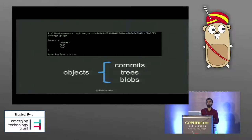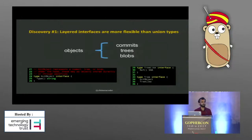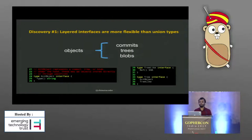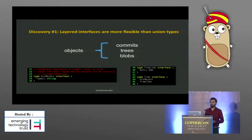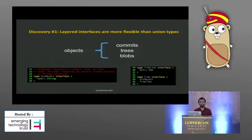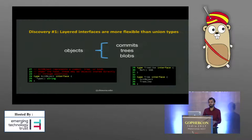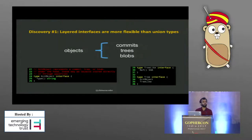Re-implementing this part in Go is pretty easy. Go already supports zlib decompression, and the contents are human readable and straightforward to parse. Our first discovery: layered interfaces are more flexible and more type-safe than union types. Git stores everything using objects, but there are different kinds. In C, this would be implemented using union types. But since we're using Go, we can use interface types. If we layer our interface types in Go, we get all the flexibility of union types in C, but with the additional type safety that Go gives us.